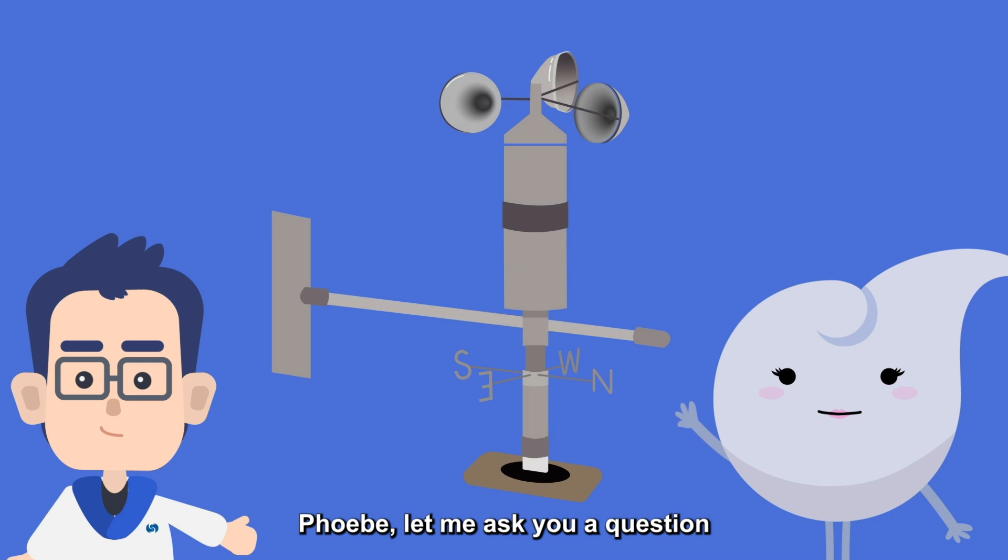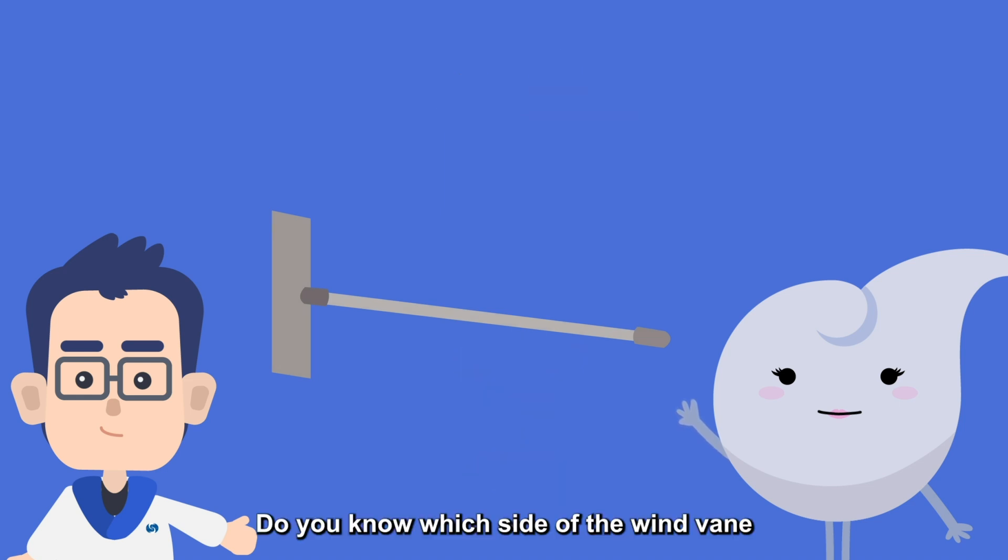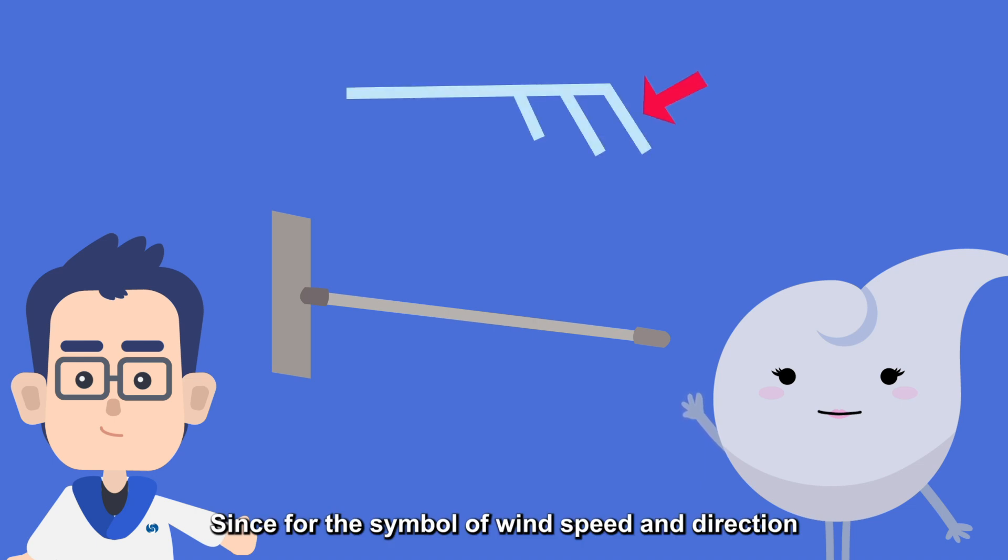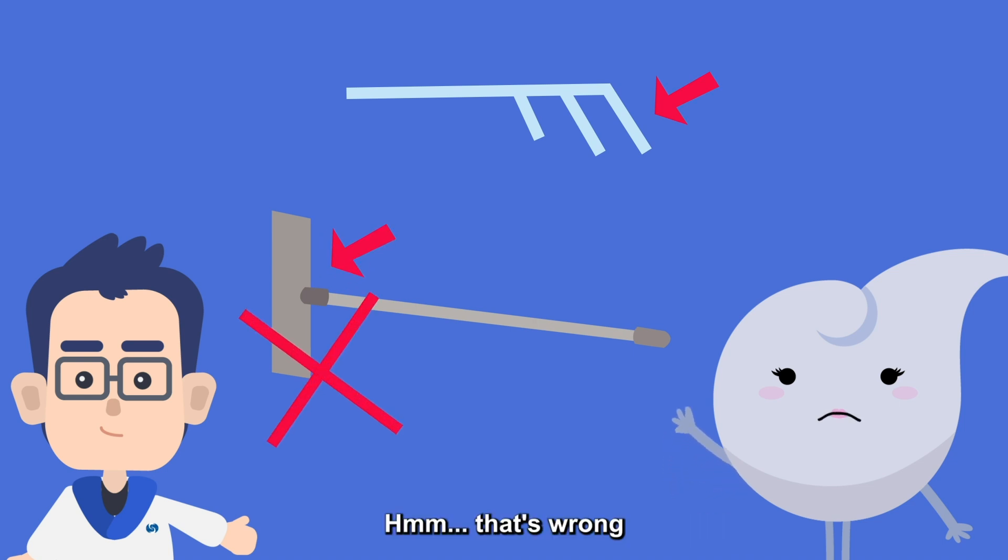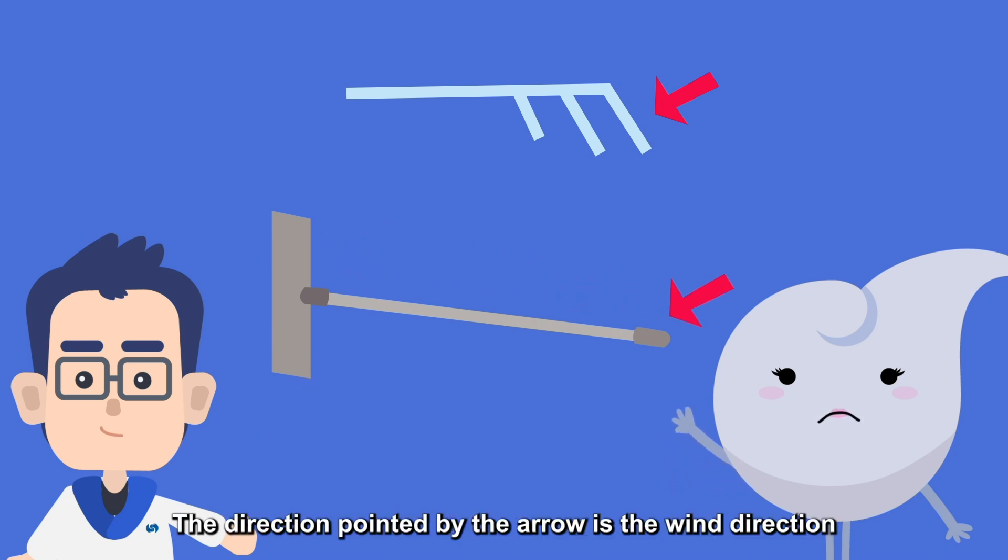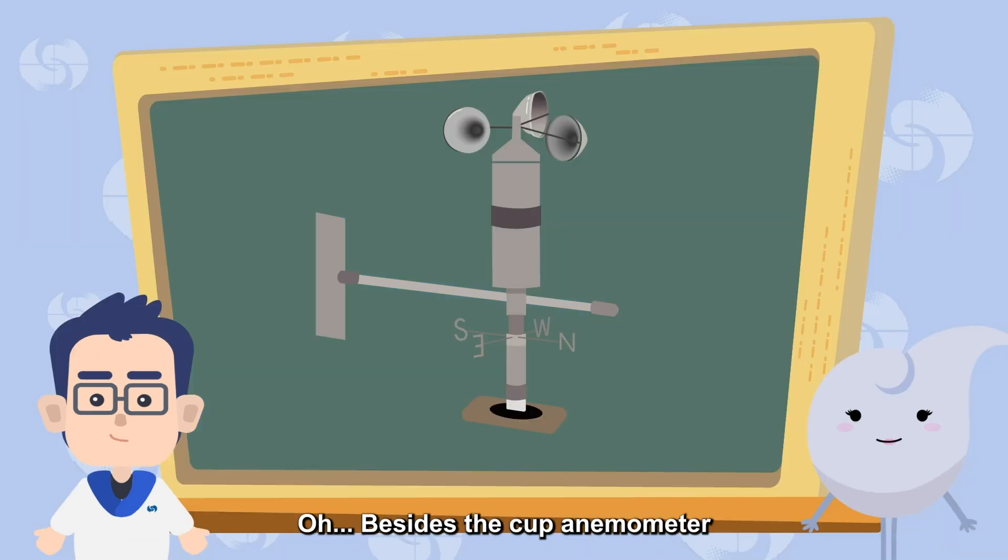Phoebe, let me ask you a question. Do you know which side of the wind vane indicates the wind direction? Since for the symbol of wind speed and direction, the direction of the tail is the wind direction, so the wind vane should be the same. That's wrong. The direction pointed by the arrow is the wind direction.